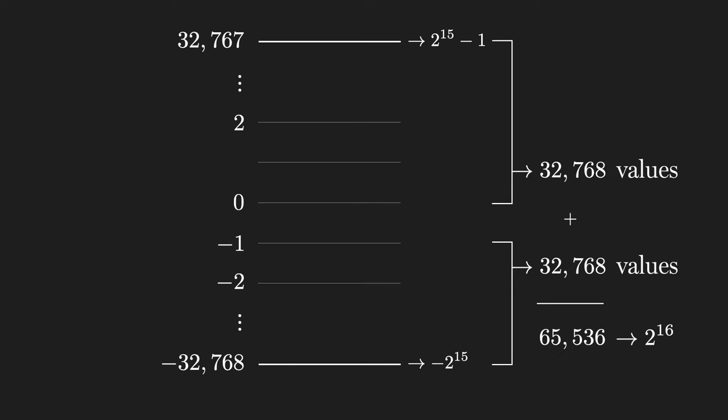So with 16 bits, we can accurately represent 2 to the 16th, or 65,536 distinct amplitude levels.